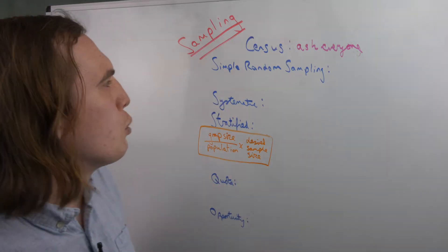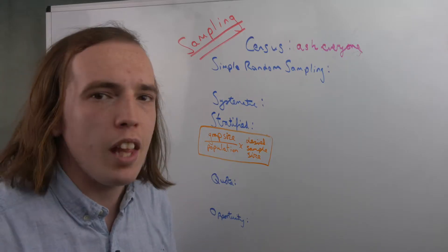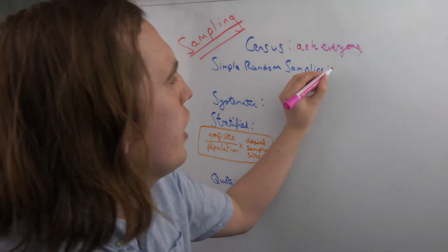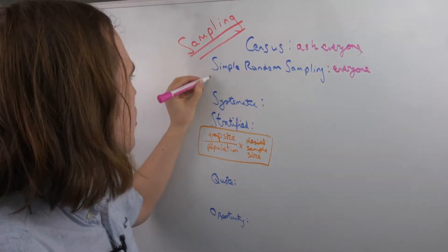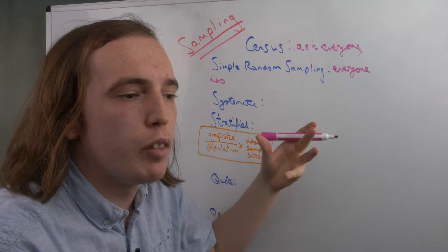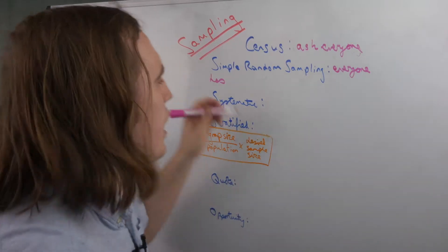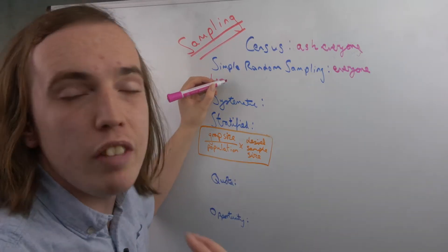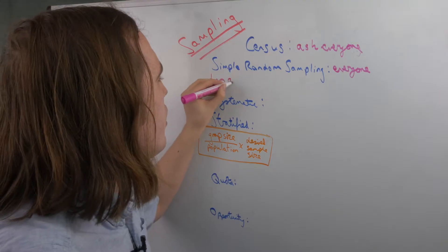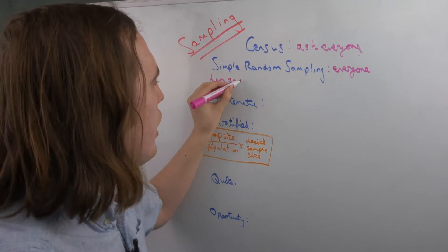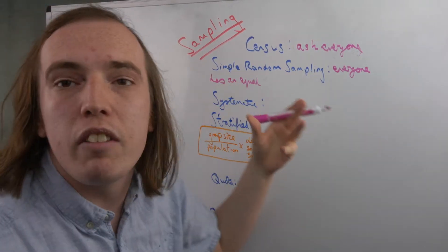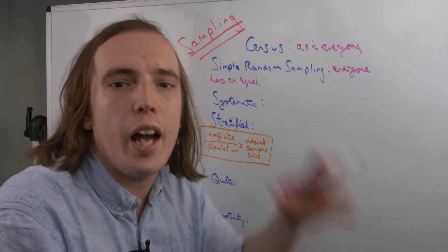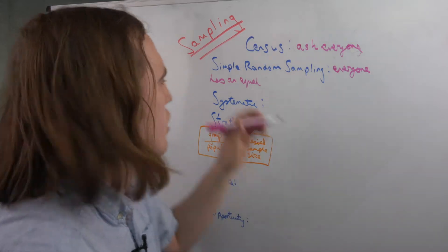The next one would be simple random sampling, and this is where everyone has the same probability of being selected. So this could either be you give everyone or everything that you're looking at a number and then use a random number generator to select which ones you're going to look at, or simply you just go around and ask random people, so long as it is a truly random selection.